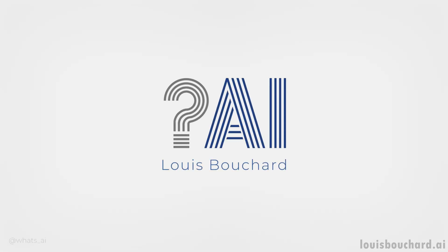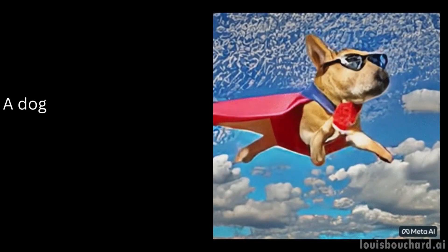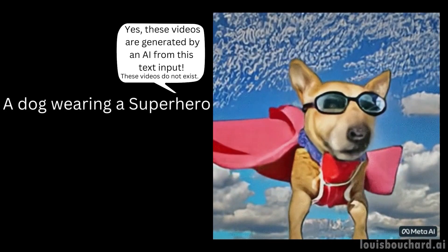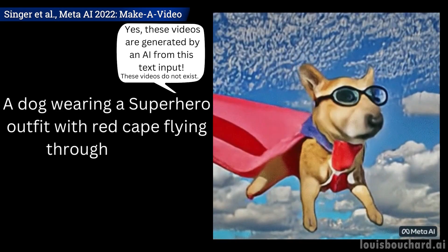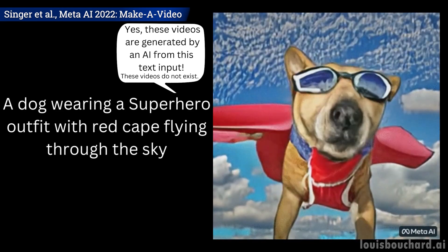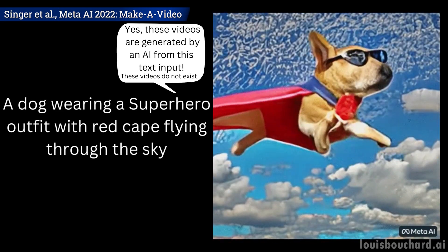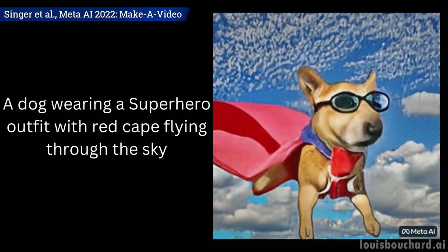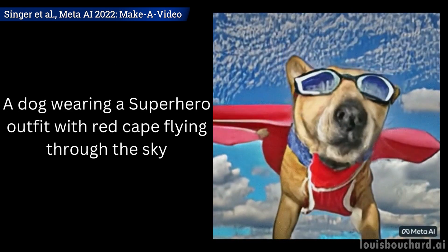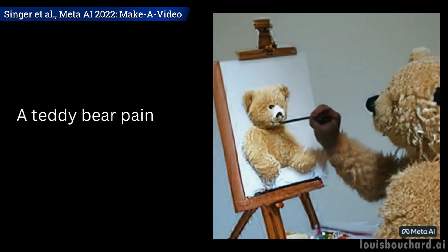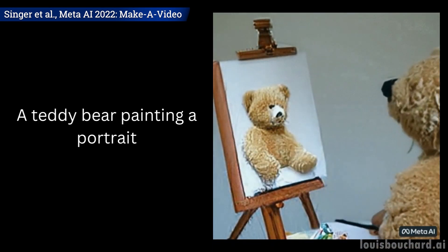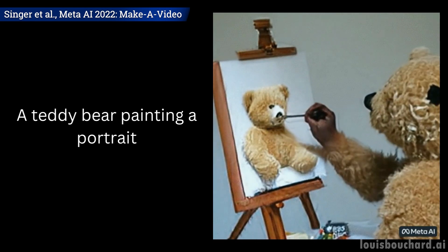Meta AI's new model, Make a Video, is out and in a single sentence, it generates videos from text. It's not only able to generate videos but it's also the new state-of-the-art method, producing higher quality and more coherent videos than ever. You can see this model as a stable diffusion model for videos, surely the next step after being able to generate images. This is all information you may have seen already on a news website or by reading the title of the video.